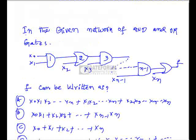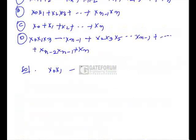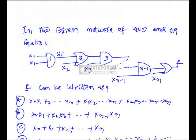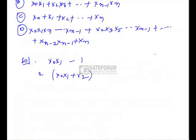The output of the first AND gate is x0·x1. The output of the second gate (OR) is x0·x1 + x2. At the third gate (AND), it becomes (x0·x1 + x2)·x3, which expands to x0·x1·x3 + x2·x3.